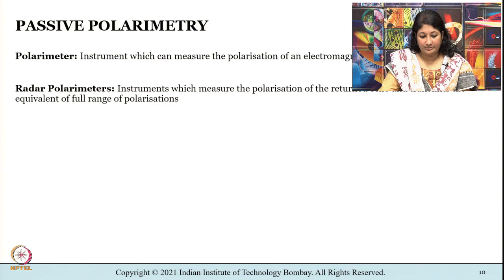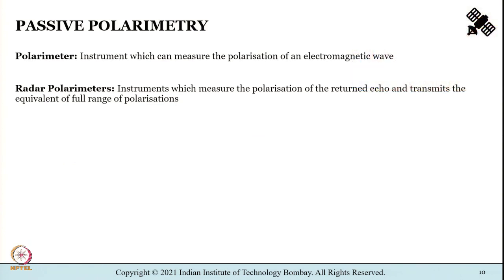Let me reiterate, when I say polarimeter it is nothing but an instrument that can measure the polarization of an electromagnetic wave. Polarization, polarimeter. And radar polarimeters are instruments which measure the polarization of the returned echo as well as transmits the equivalent of full range of polarizations. And a radar polarimeter will transmit in horizontal as well as vertical polarizations.